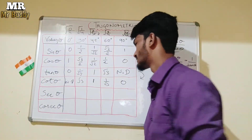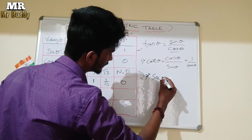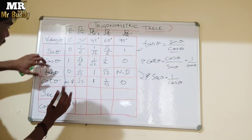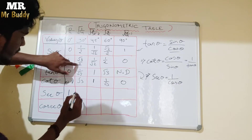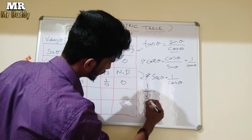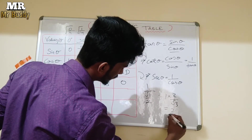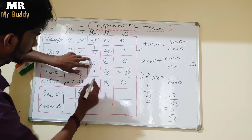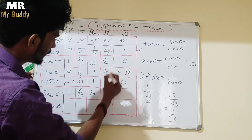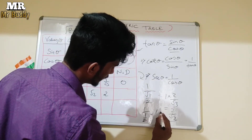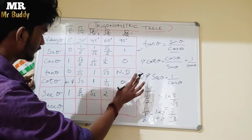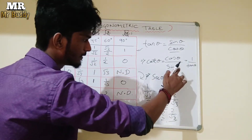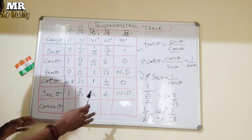Next, we need to write secθ. Secθ is 1 upon cosθ, so we divide 1 by each cosθ value. 1 divided by 1 = 1. 1 divided by √3/2 = 2/√3. 1 divided by 1/√2 = √2. 1 divided by 1/2 = 2. And 1 divided by 0 is not defined. This method gives all the secθ values.